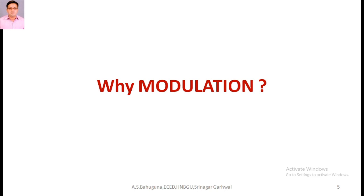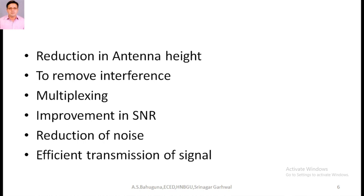Now, the question arises: why do we use modulation? There are some factors which indicate why we use modulation. First one is the reduction in the antenna height. The antenna height totally depends upon the wavelength. As we know E = hf, and E = hc/λ, so we can correlate the energy with respect to the wavelength. The antenna size is s = λ/4, so it totally depends upon the wavelength.